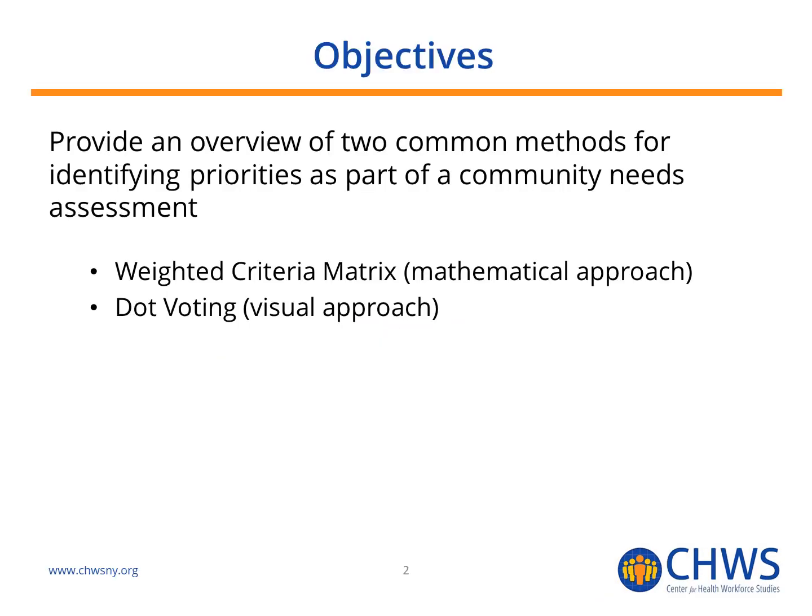While there are a number of approaches for prioritizing community needs, this webinar will focus on two. The first approach we will discuss is the weighted criteria matrix, which is more of a mathematical approach. The second, the dot voting method, is more visual and participatory.